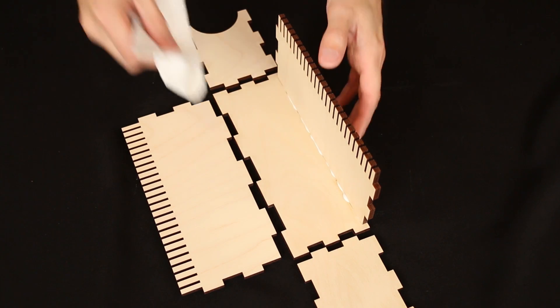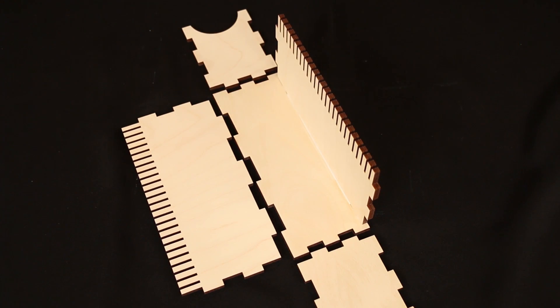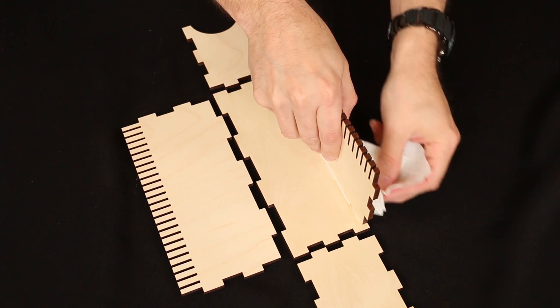With a little bit of paper towel, you're just going to run along that groove and smooth it out. And you'll want to do the same thing on the outside edge as well.